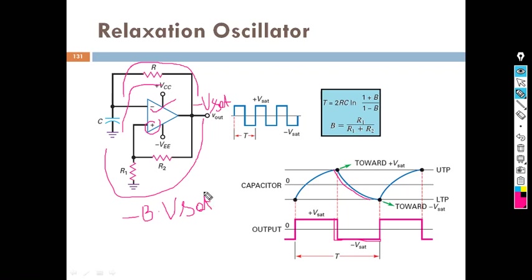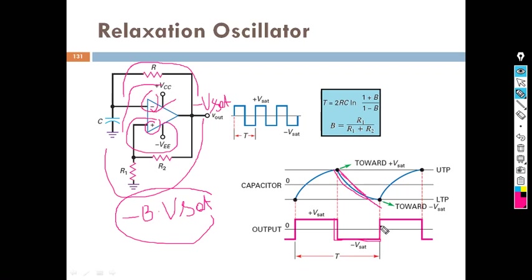It is B into minus Vsat. When the capacitor voltage goes below minus B·Vsat — that is, the capacitor discharges below that level — then the voltage at the positive terminal becomes higher than the negative terminal. At that time, the output gets to plus Vsat and the capacitor will try to charge in the positive direction. In this way, the charging and recharging of the capacitor repeats, and we can see the time period T is nothing but the on period and off period of this pulse waveform.